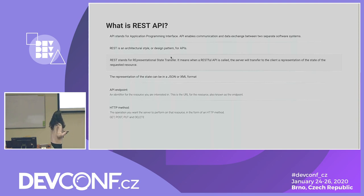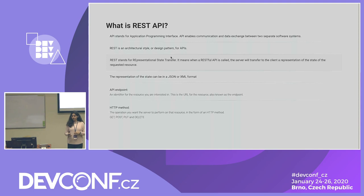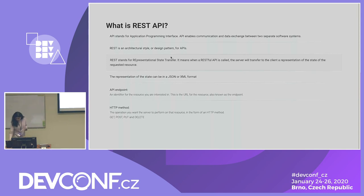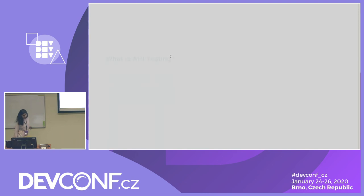HTTP method is the operation that you want to perform on that resource in the form of an HTTP method. The different HTTP methods available are GET, POST, PUT, and DELETE. We're going to talk more about these HTTP methods in the next slides as well.